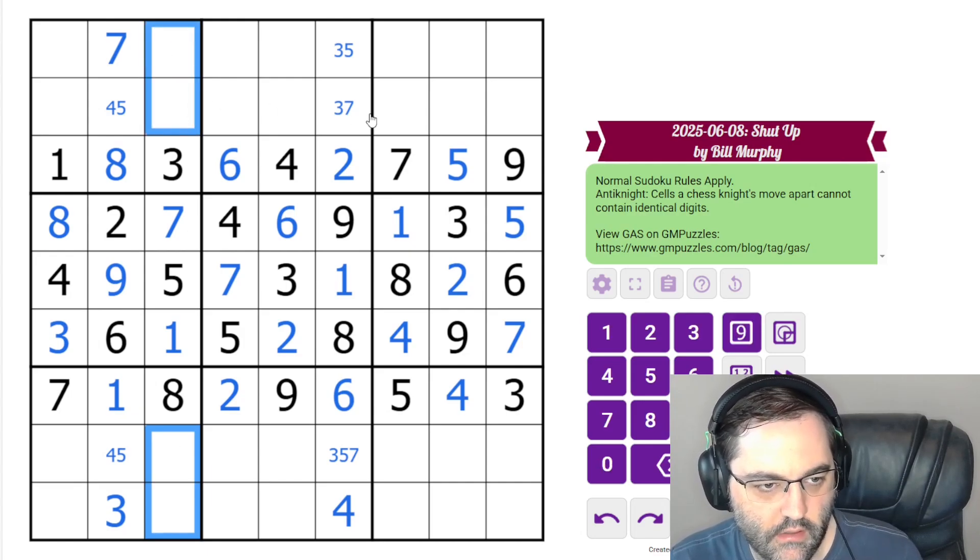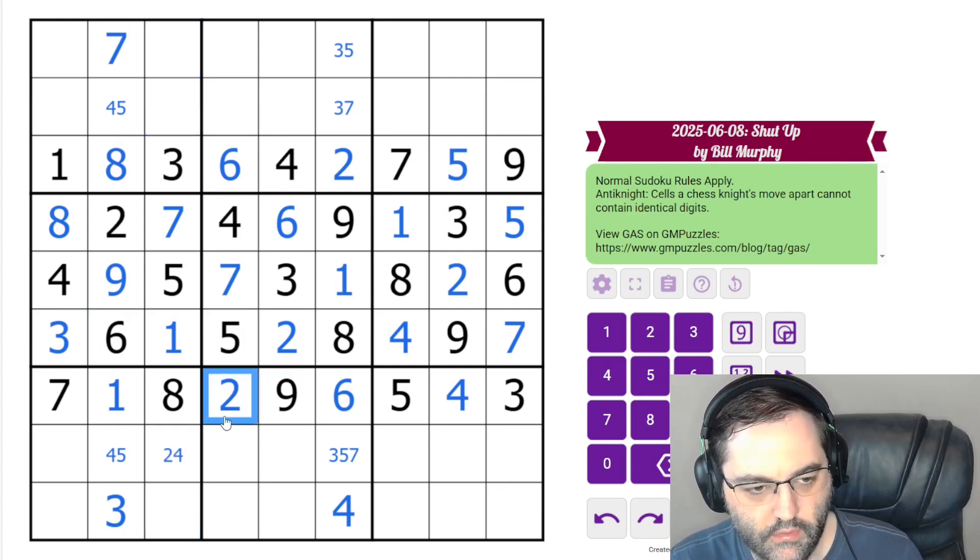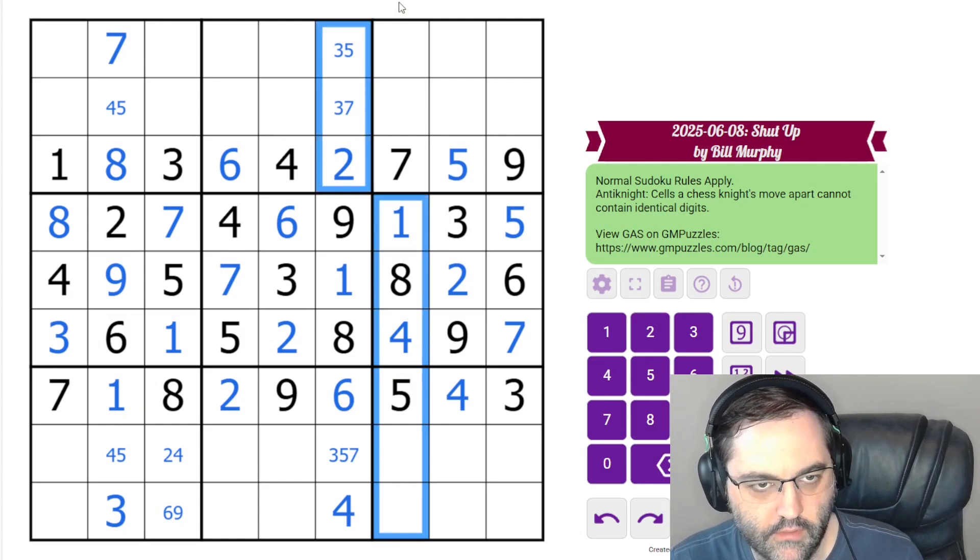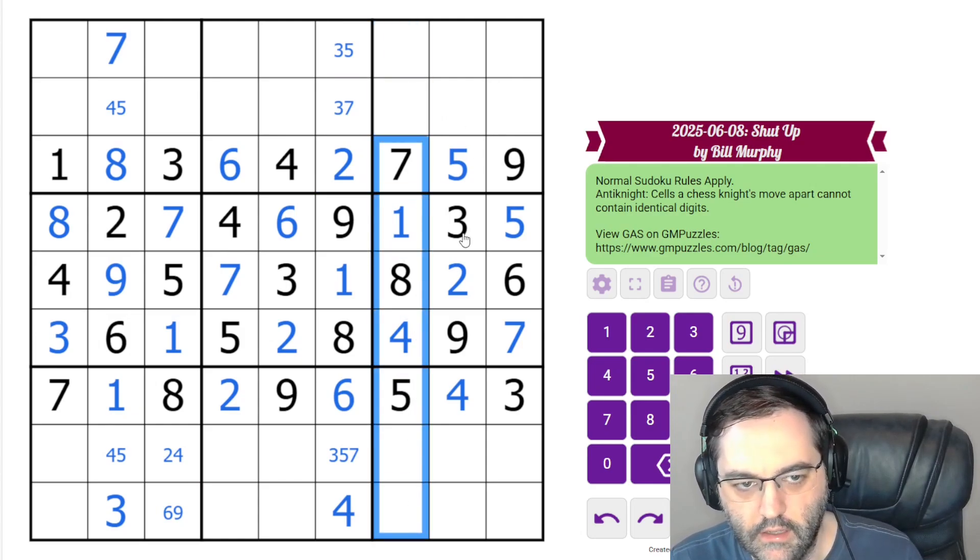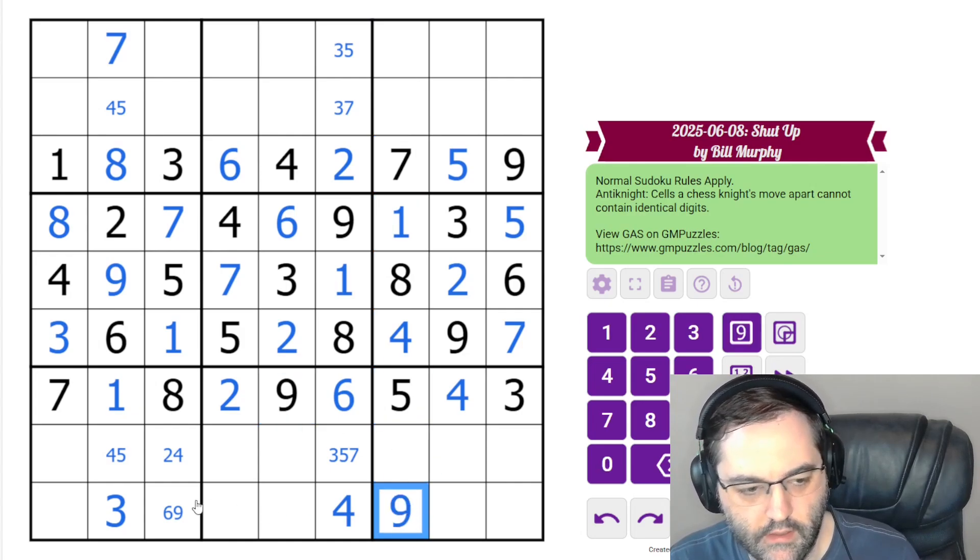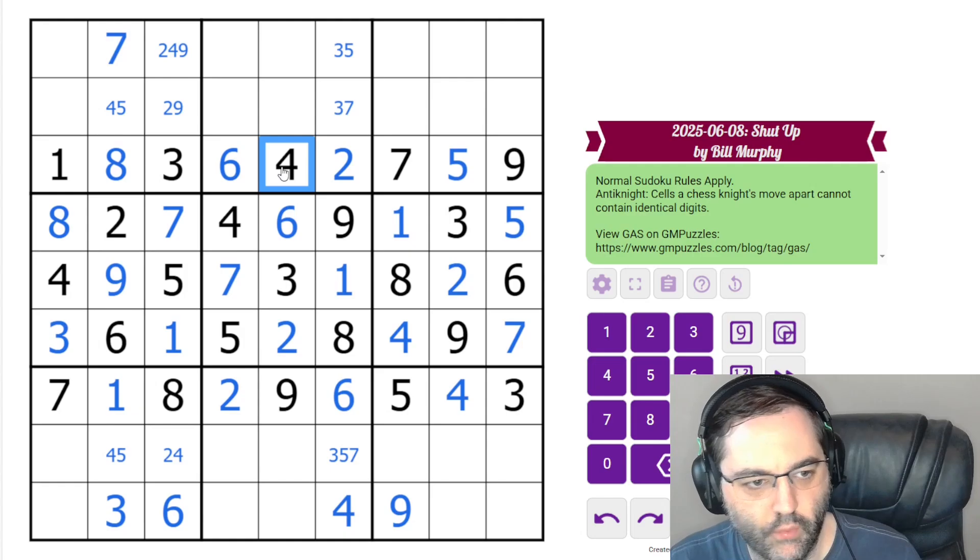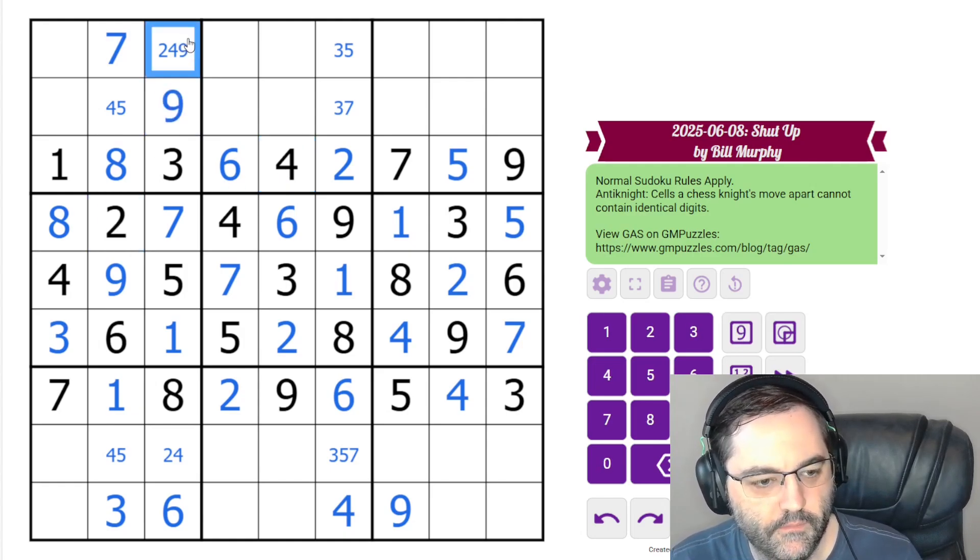These cells contain two, four, six, and nine. This one can't contain six or nine, so it's two or four. And two and four see this cell, so this is six or nine. We'll come back to that. I think we want to look at this column next. Nine can't go up here, nine can't go here, so this is nine. And that's going to give us a six here. This one's not four or two, so that's nine.